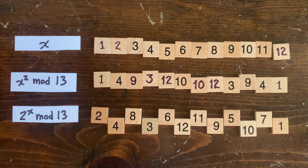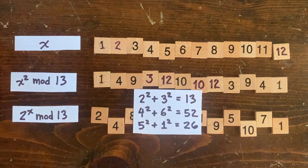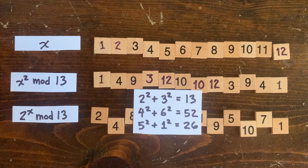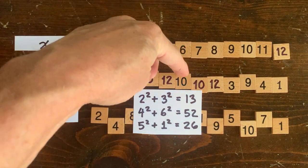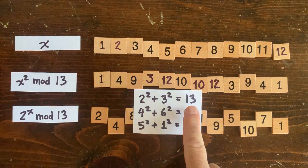But oops, actually we found three cases where a sum of squares equals some multiple of 13, because we were working mod 13. So only in the first case do we have two squares whose sum actually equals 13 itself.